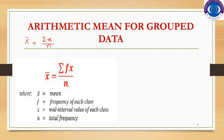To calculate the arithmetic mean for grouped data, the formula is x̄ = Σ(f·x) / n. In grouped data, n is equal to Σf, so we can also write it as x̄ = Σ(f·x) / Σf.